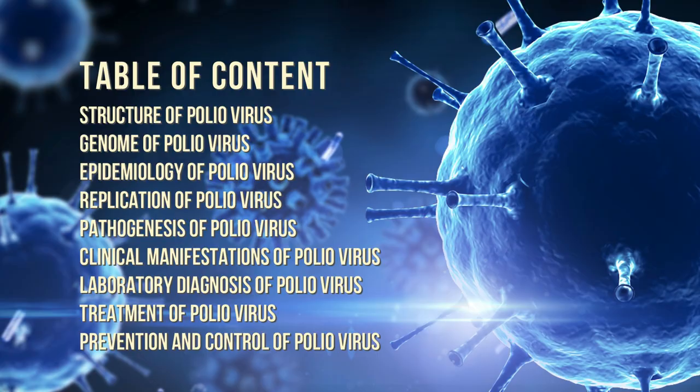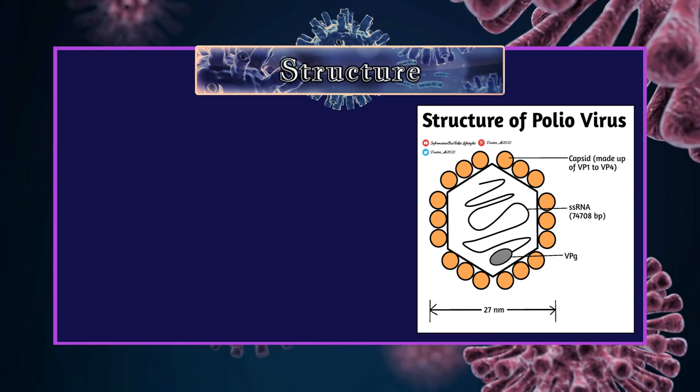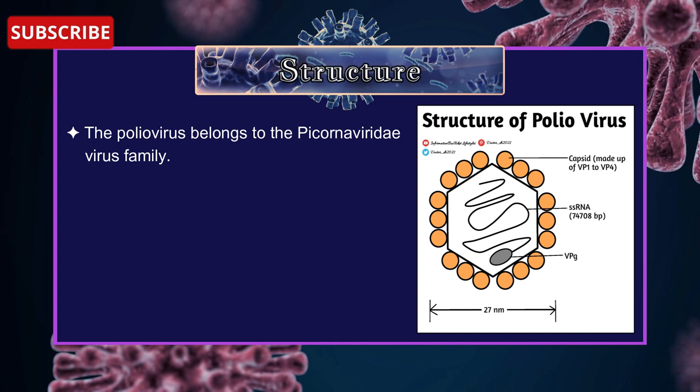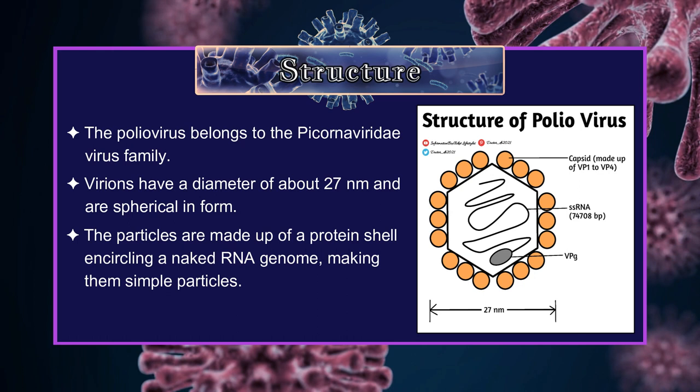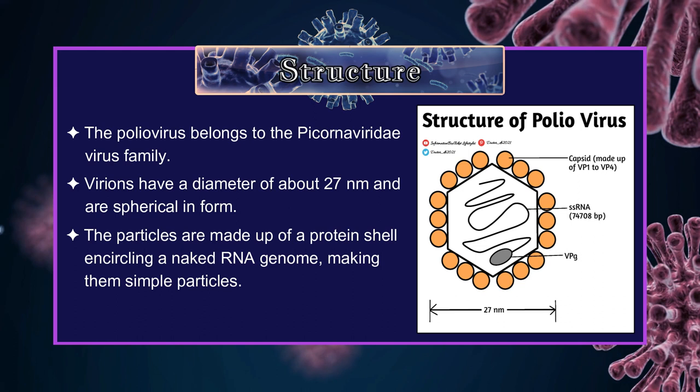Let's start this video with the structure of Poliovirus. With the help of this diagram, we will understand the structure. The Poliovirus belongs to the Picornaviridae virus family. Virions have a diameter of about 27 nm and are spherical in form.